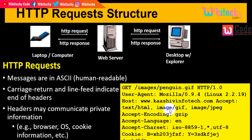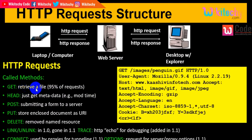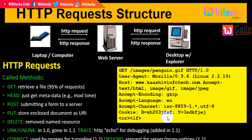You can see GET retrieving files and images, the protocol version, and header information to get metadata. The host indicates which host to access, along with accepted content types: HTML text, GIF images, JPG images. The encoding is gzip, language is English, character sets ISO and Unicode are supported, and if there is any cookie data it will be included.